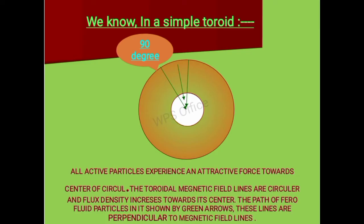All active particles experience an attractive force towards the center of the circle. The toroidal magnetic field lines are circular and flux density increases towards its center. The path of ferrofluid particles is shown by green arrows, and these lines are perpendicular to the magnetic field lines.